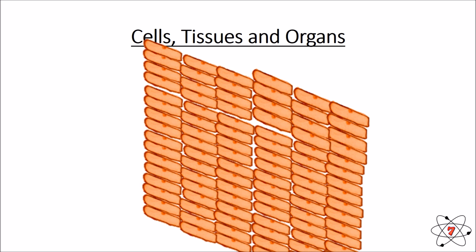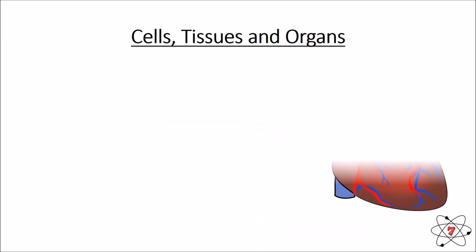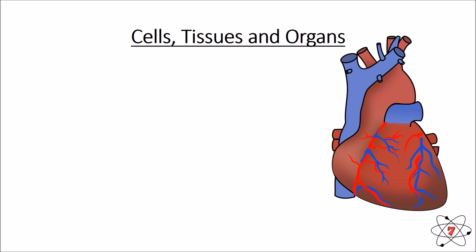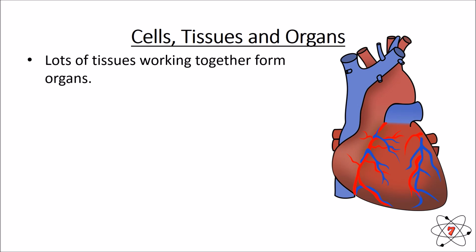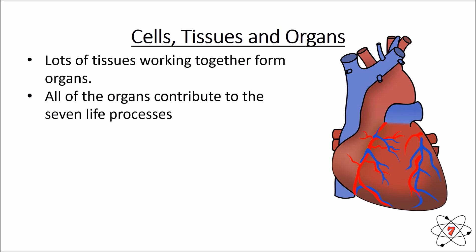When we take tissues and join them together, we start to make something more — we start to make an organ. If we join lots of heart cells together we make a heart tissue, and if we join lots of heart tissues together we eventually make a heart. So lots of tissues working together form organs.